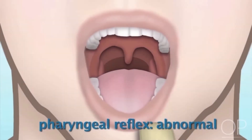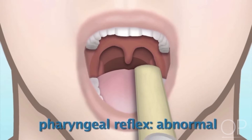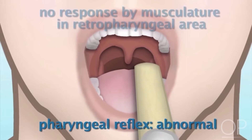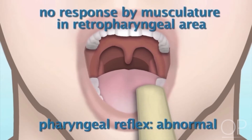In patients with an abnormal pharyngeal reflex, when you insert a tongue blade deep into the back of the patient's throat, you will see no response by the musculature in the retropharyngeal area.